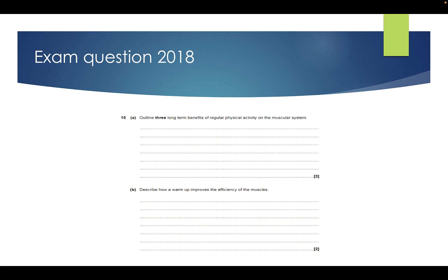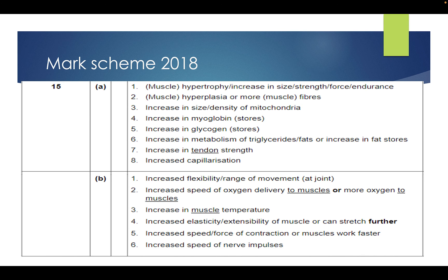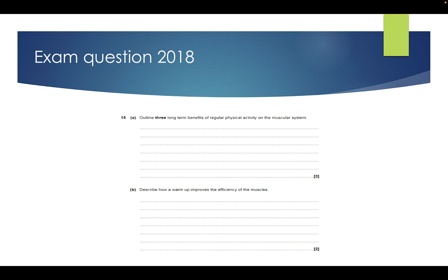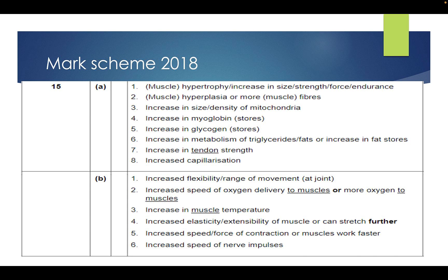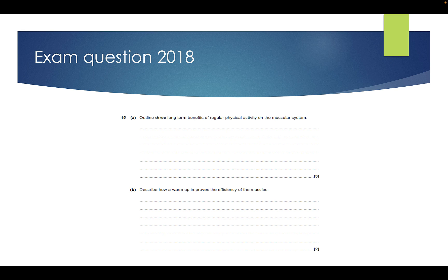For section A — outline three long-term benefits of regular physical activity on the muscular system — it's going to increase your muscle size (hypertrophy), there's also hyperplasia or more muscle fibres, increase the size or density of the mitochondria, increases myoglobin, increases glycogen, increases the metabolism, increases tendon strength, or increases capillarization. To describe how a warm-up improves the efficiency of the muscles: it increases flexibility, increases speed, increases muscle temperature, increases elasticity so the muscle can stretch further, increases the speed or force of contraction, and increases the speed of the nerve impulses. This question is out of five, though you can have more points than five. Make sure you have your AO1, AO2, and AO3 — state what it is, explain what it does, and link it back to the question or to sport.